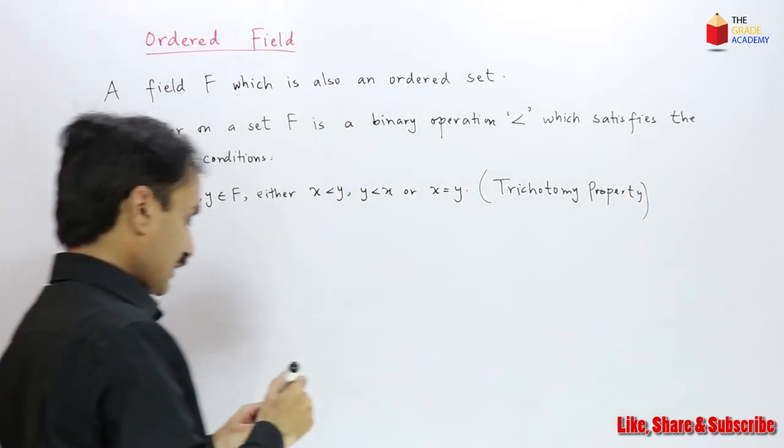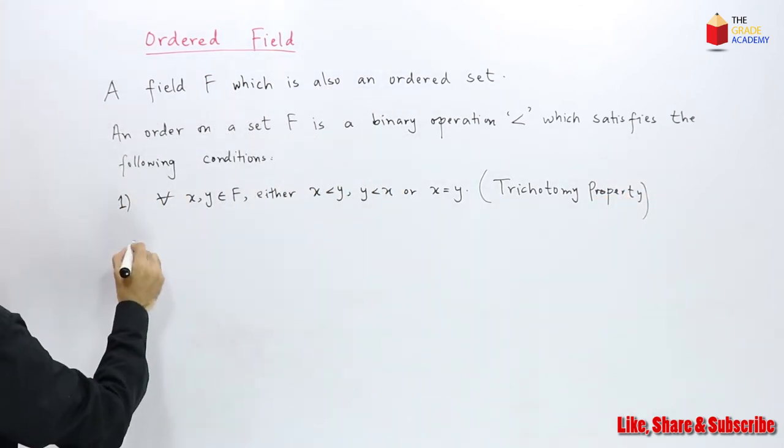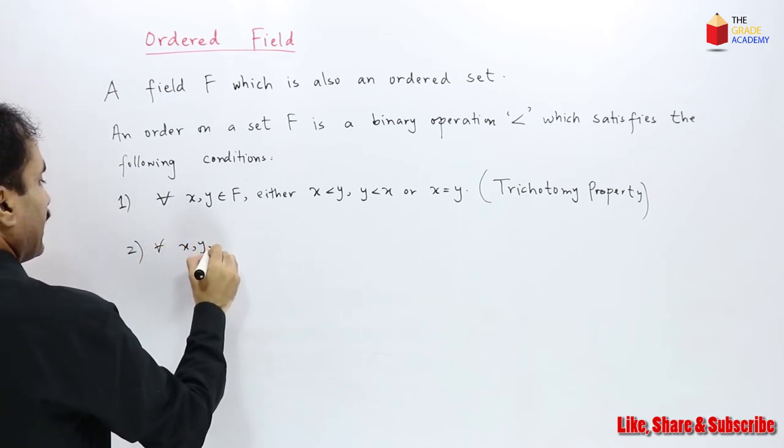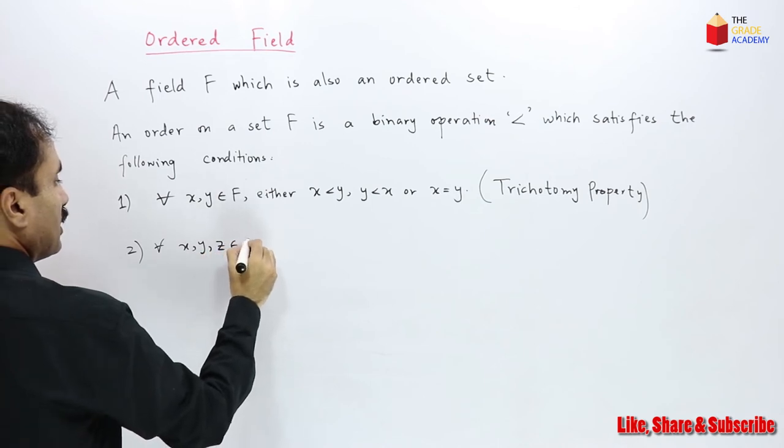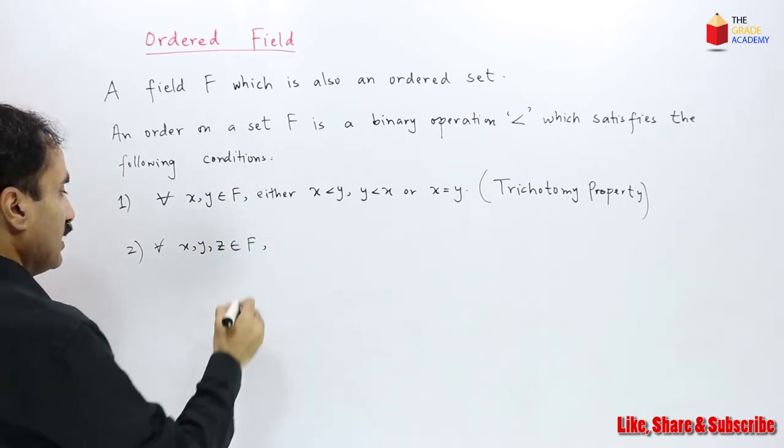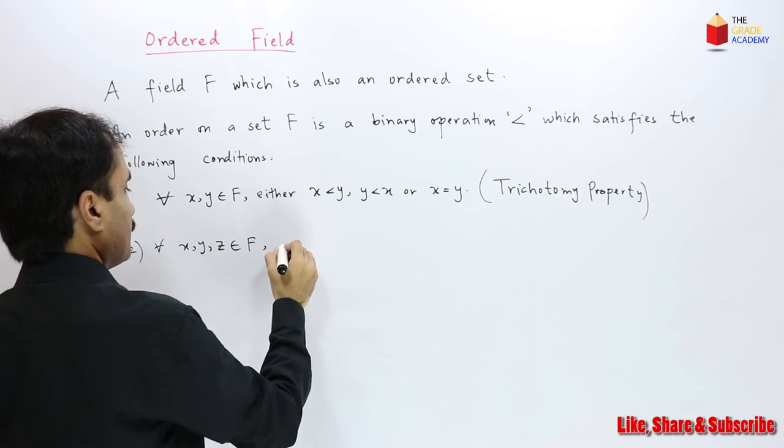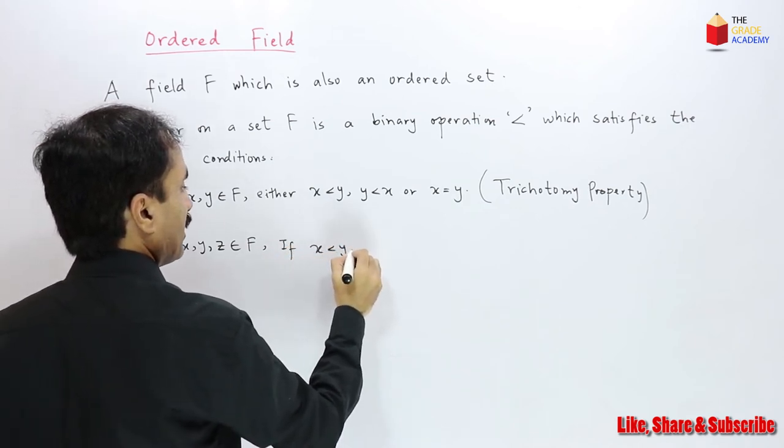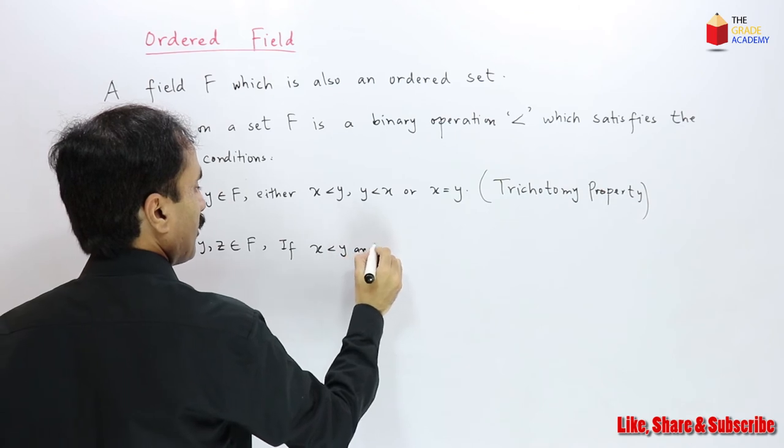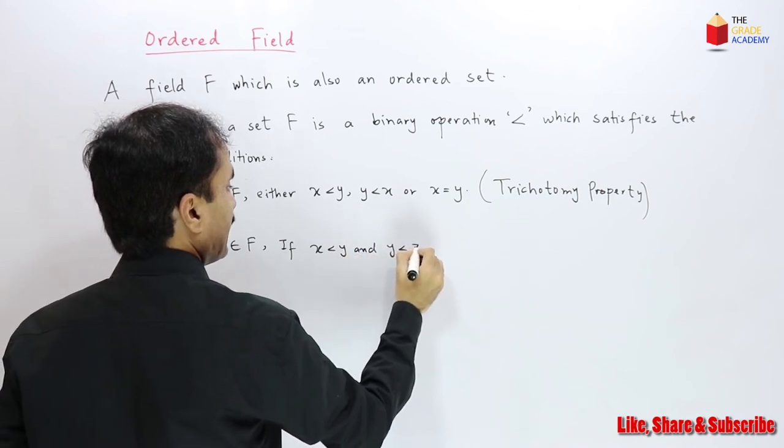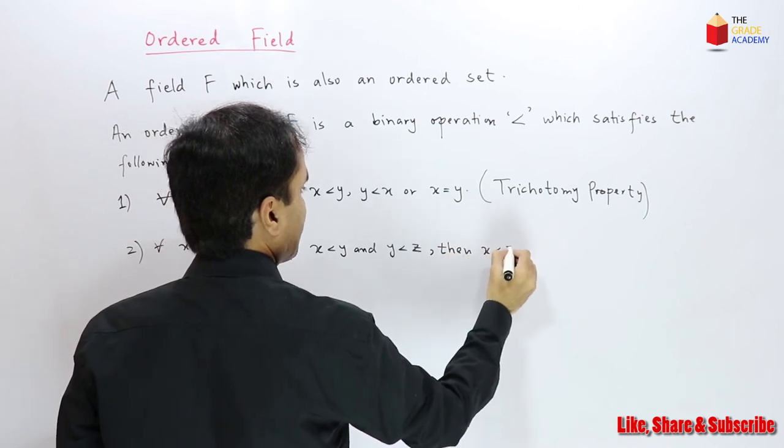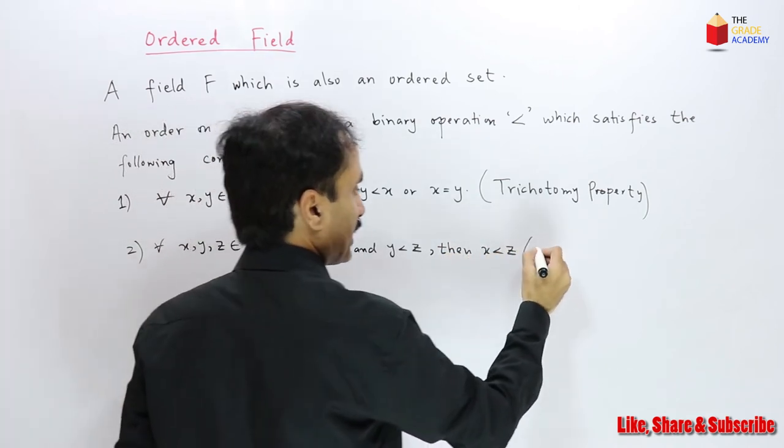The second condition is that for all x, y, and z belonging to F, if x is less than y and y is less than z, then x is less than z. This is called transitive property.